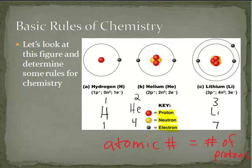If you look at helium, we have two protons and an atomic number of two. Lithium, we have three protons and an atomic number of three. It also equals the number of electrons, but it's the protons that determine the atomic number.